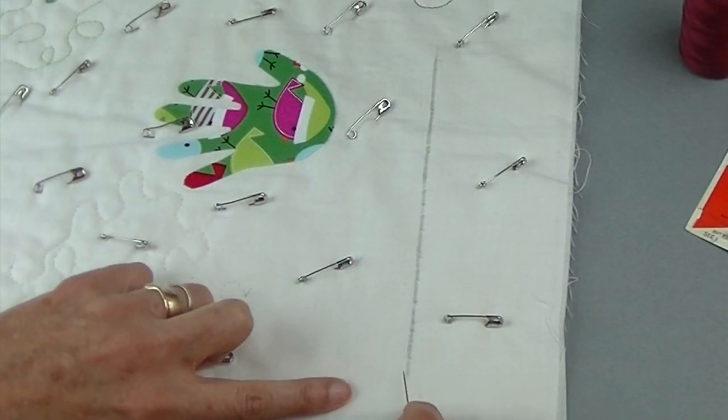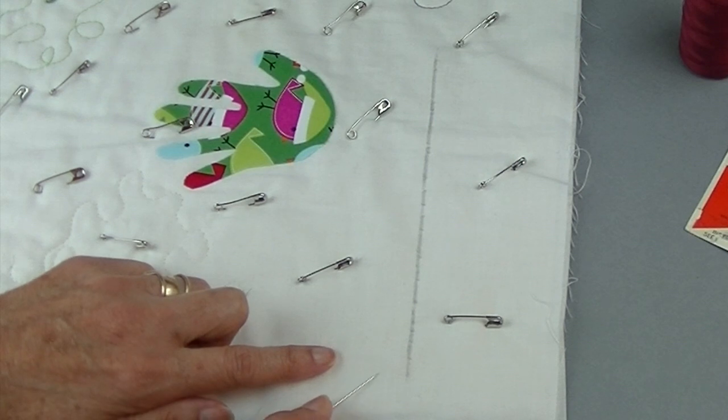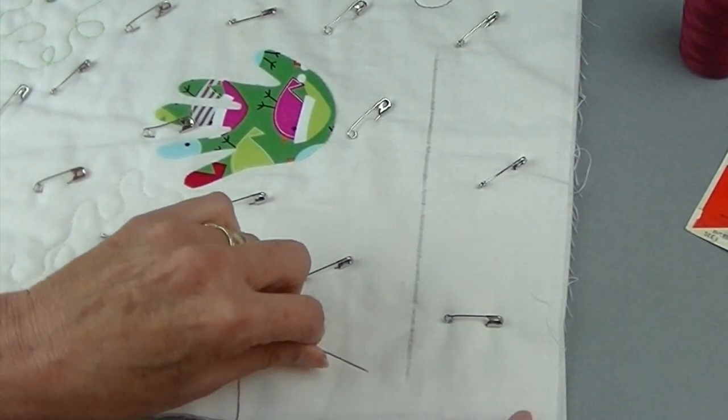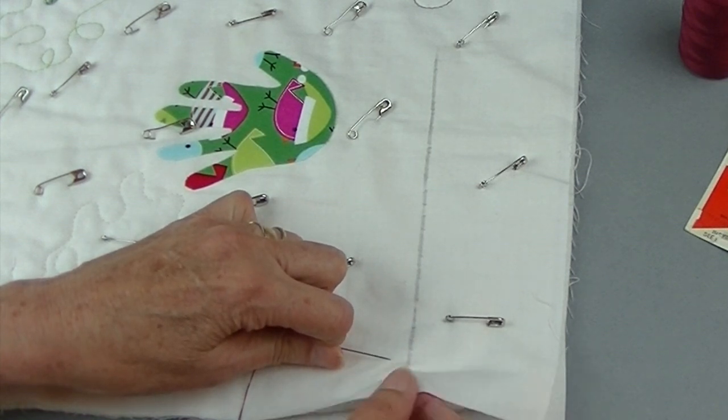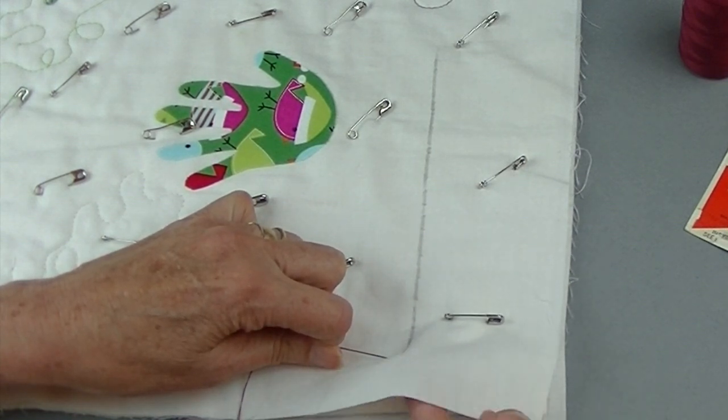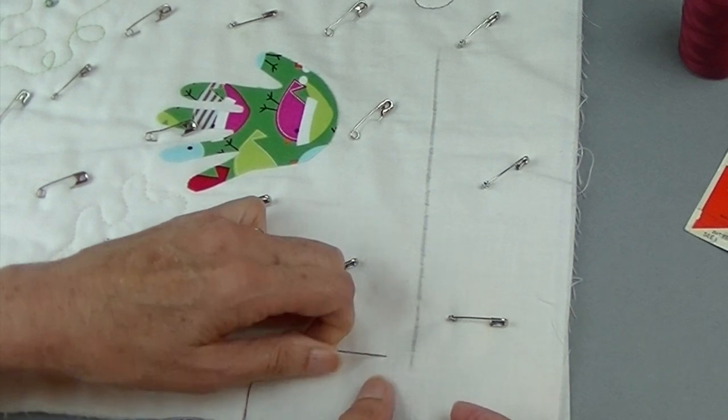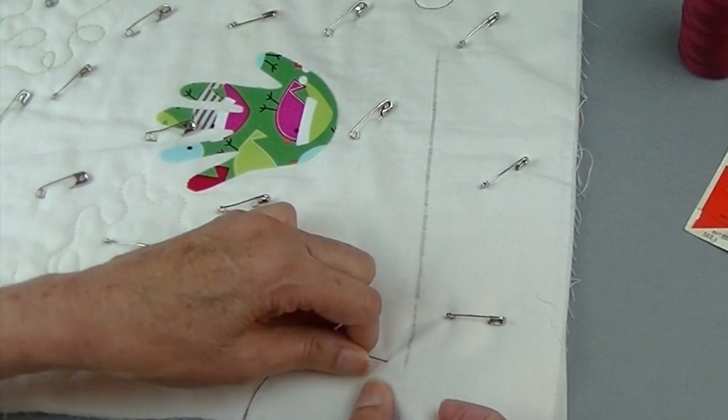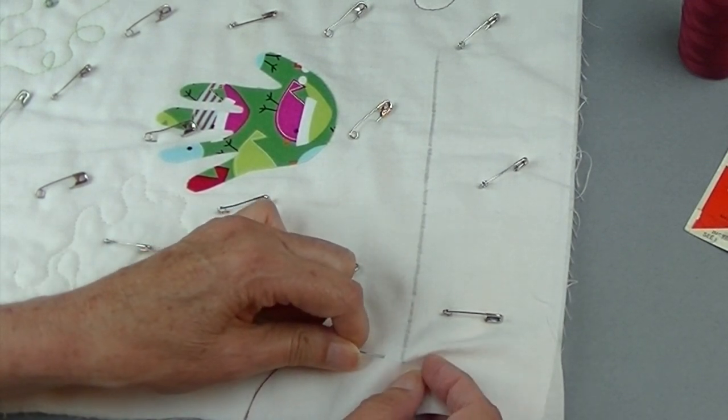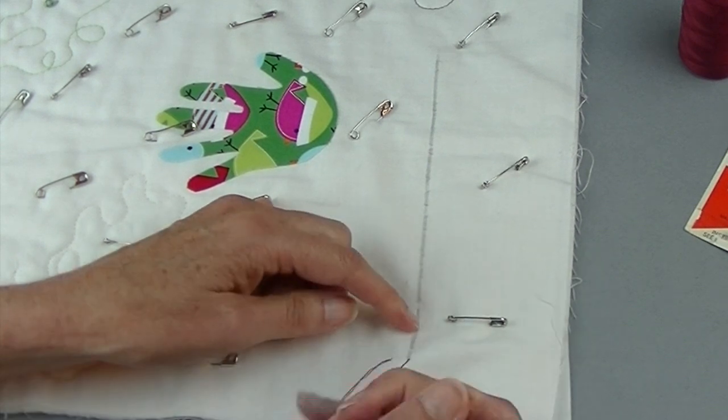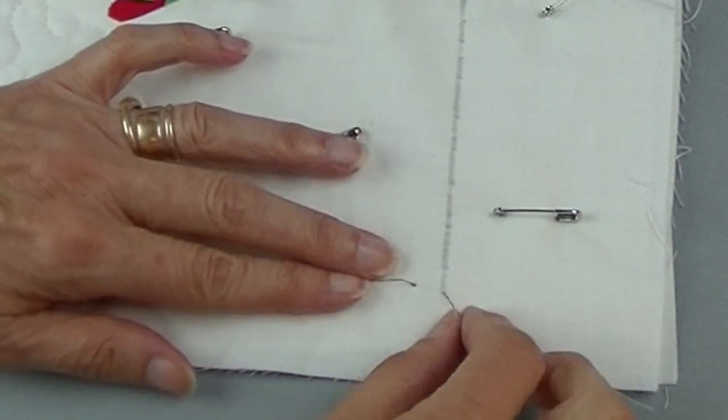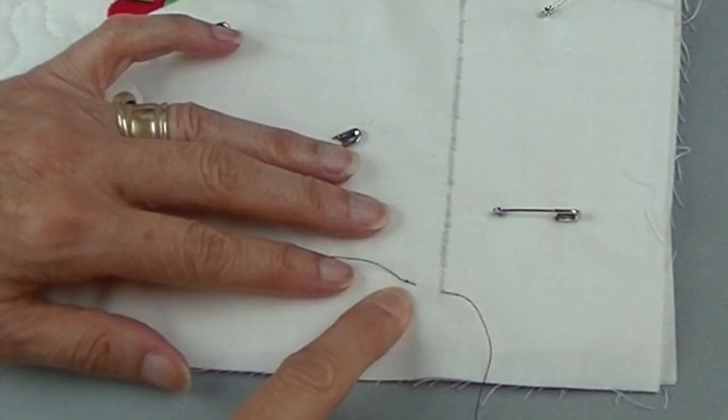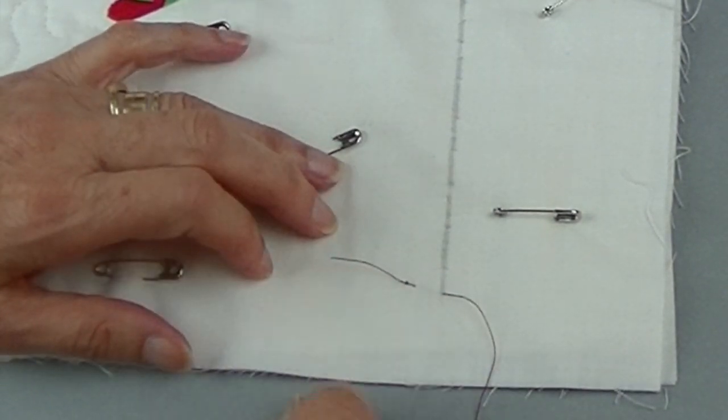So instead of starting on the end here I'll start over, about half of an inch or so. And I'll come into the fabric. And I'm only going to go into this top piece. If you get part of the batting that's okay, but it's best just to come into your quilt top. And I'm at this point, the knot is stuck here. And there's a tail.